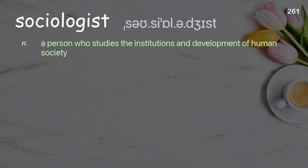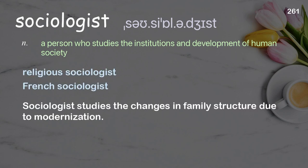Sociologist: a person who studies the institutions and development of human society. Examples: religious sociologist; French sociologist. Sociologist studies the changes in family structure due to modernization.